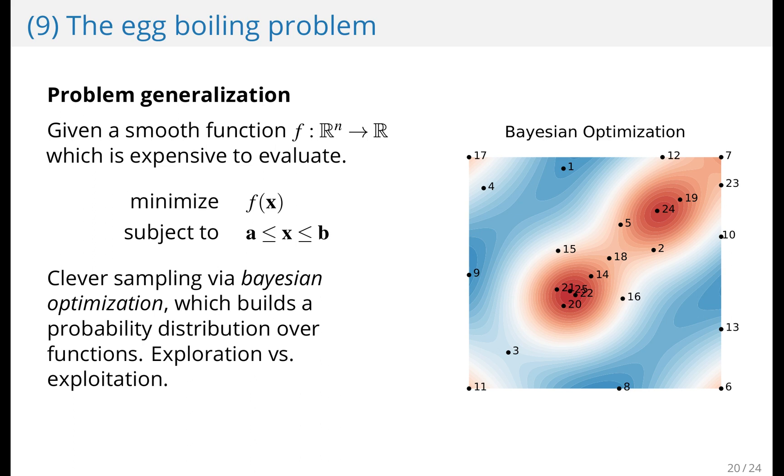This is exactly what Bayesian optimization does, as you can see on the right, and really finds the optimum in 25 samplings. And it never computes any derivatives or anything like this.